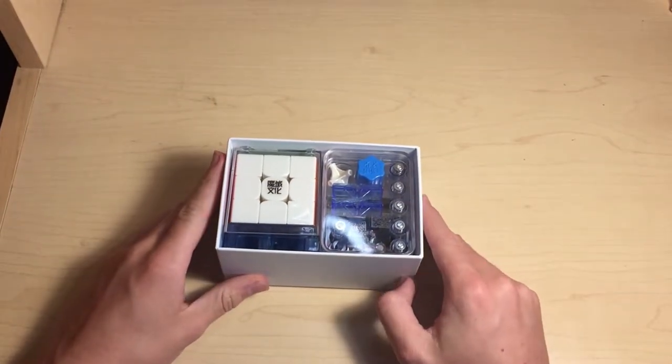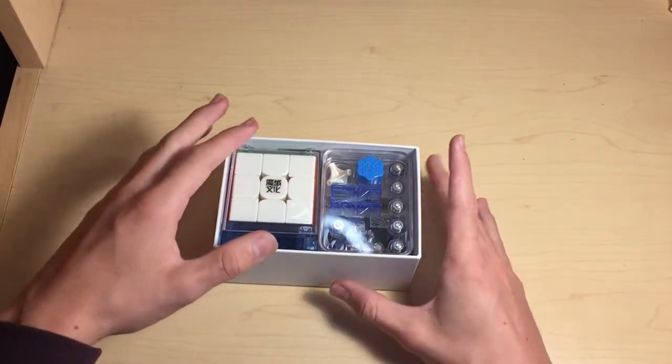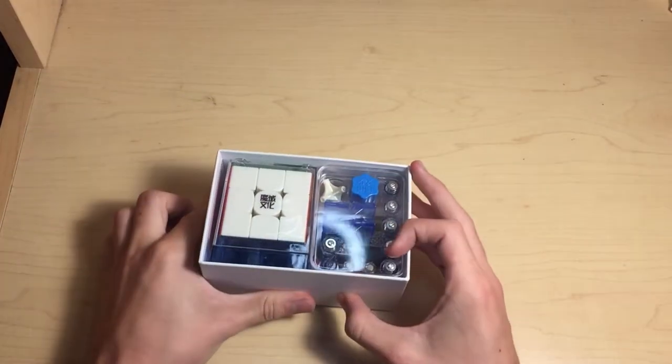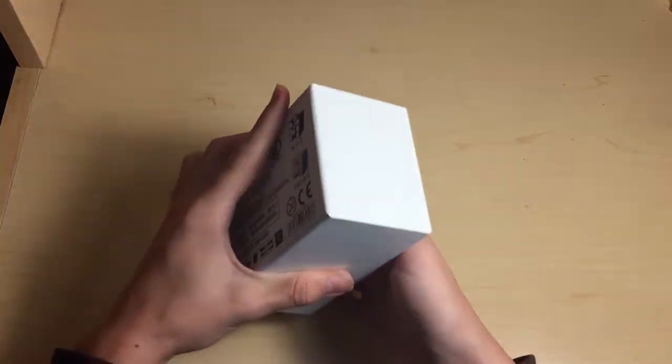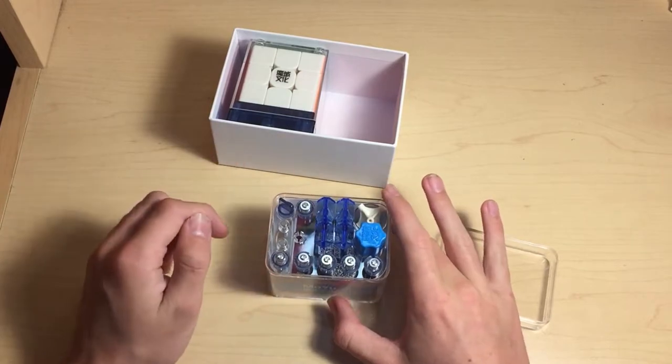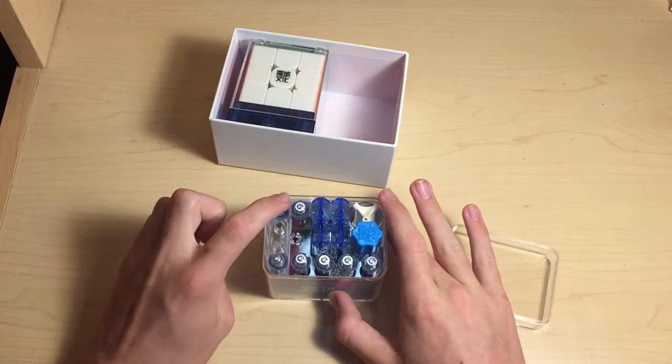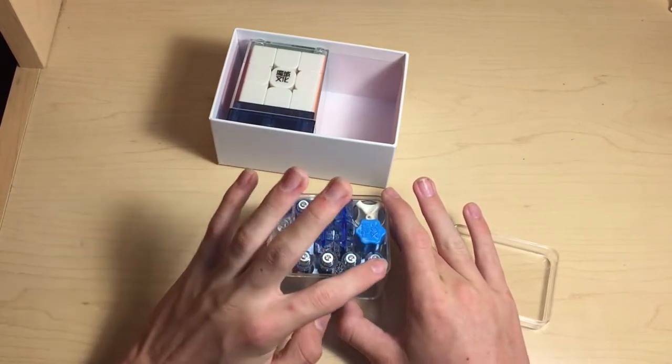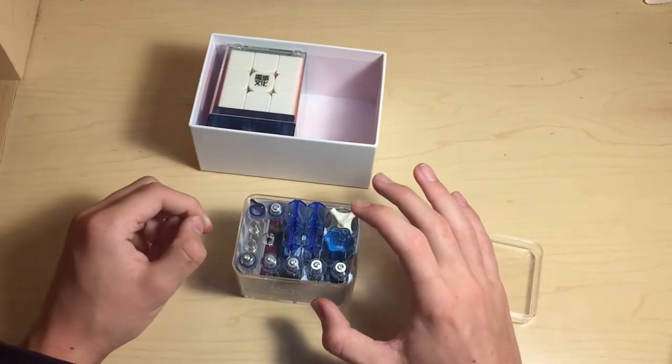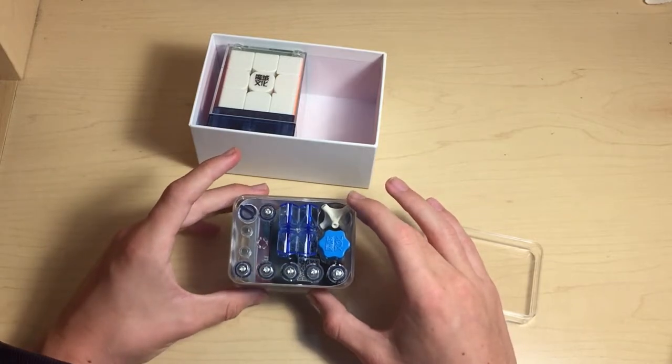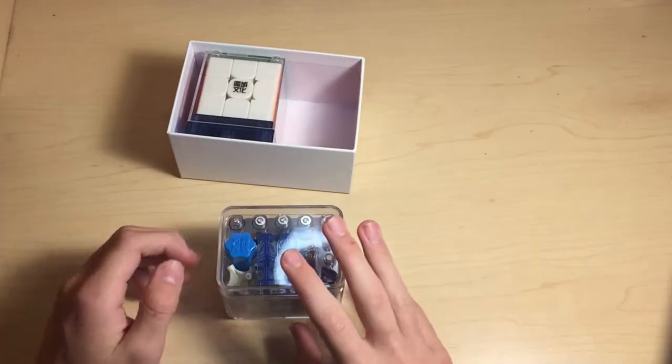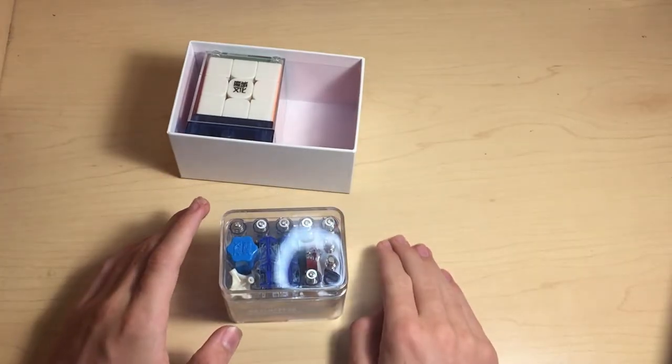All right, so this is definitely extremely premium packaging. It looks like we have the cube in a nice little case and the accessories. So I'm just going to take a look at these really quick. In here it looks like we have the dual adjustment system tool, some extra hardware, extra magnets, these little tools right here that help you get even tensions, a screwdriver, and an extra core. It looks like down at the bottom we have some MoYu cards and some pamphlets, but I'm just going to set these aside and get right into the cube.